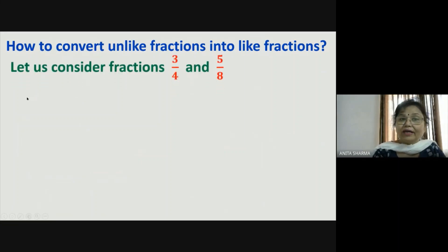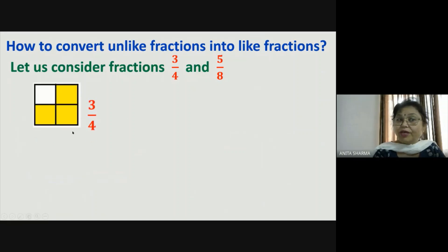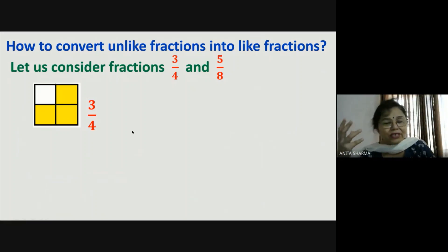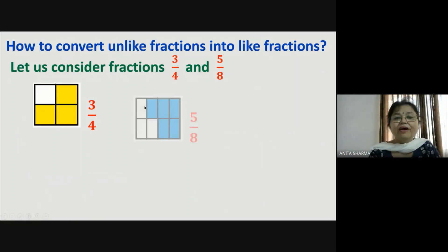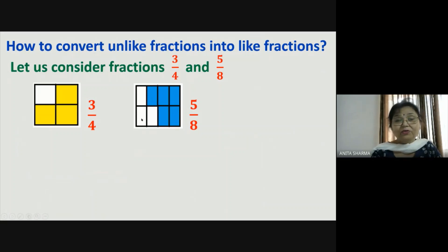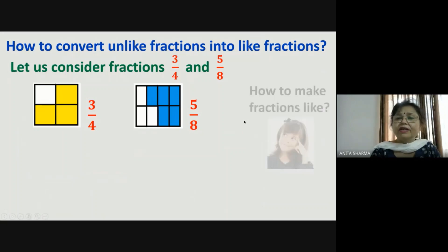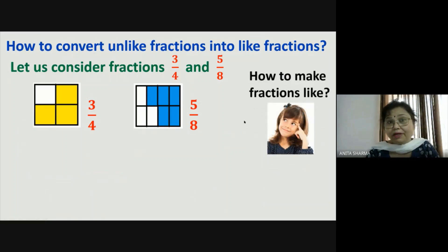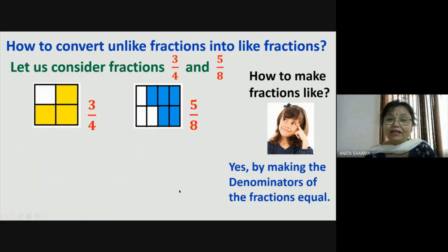Let us consider the fractions three-fourth and five-eighth and represent them pictorially. Three-fourth: the whole is a square divided into four parts. Five-eighth: the whole is divided into eight parts. These are unlike fractions — one part here is bigger and one is smaller, so the unit fractions are not the same size. We need to make their denominators equal to convert them into like fractions.